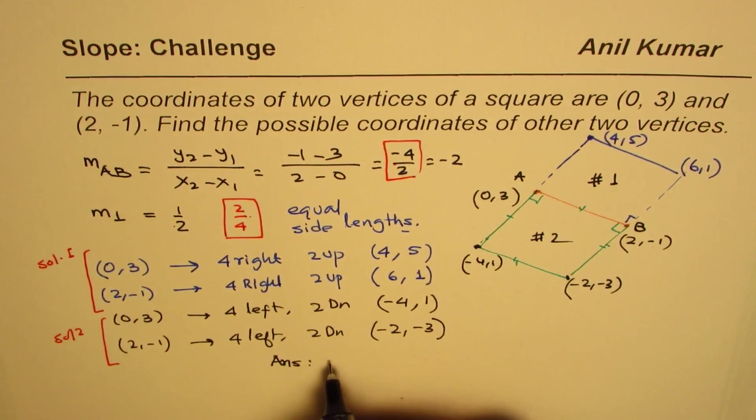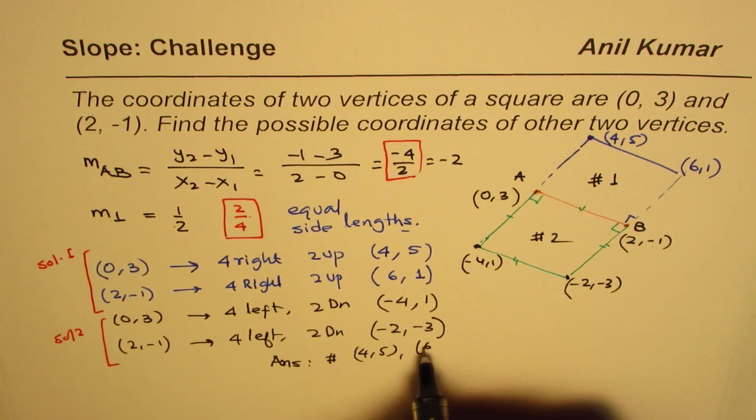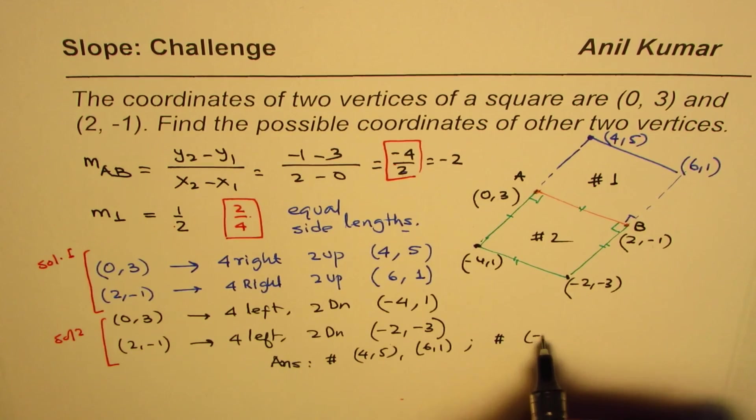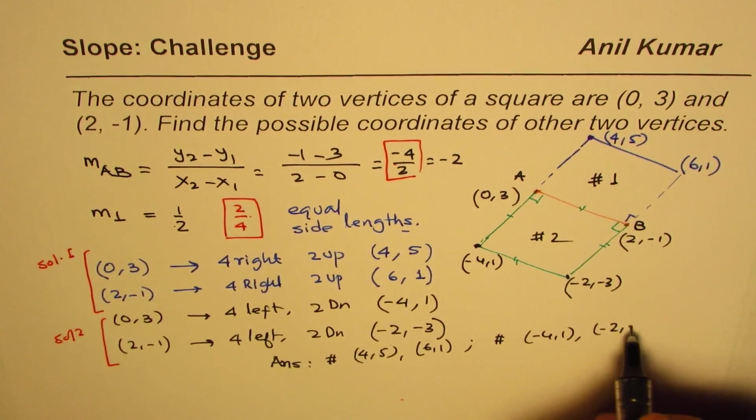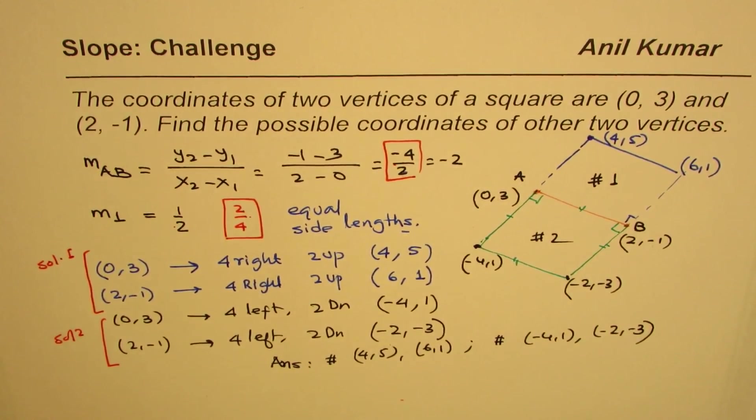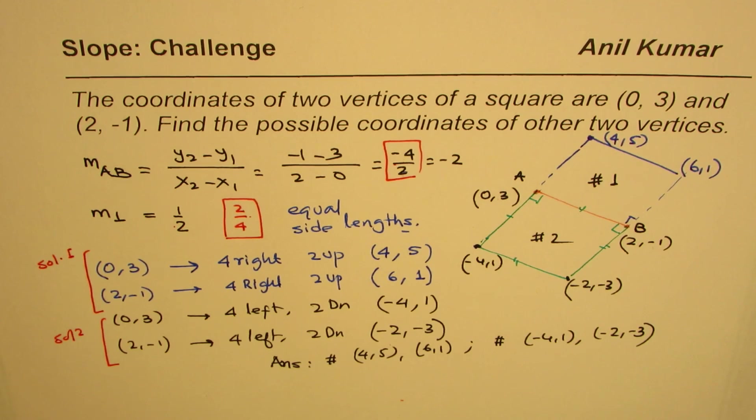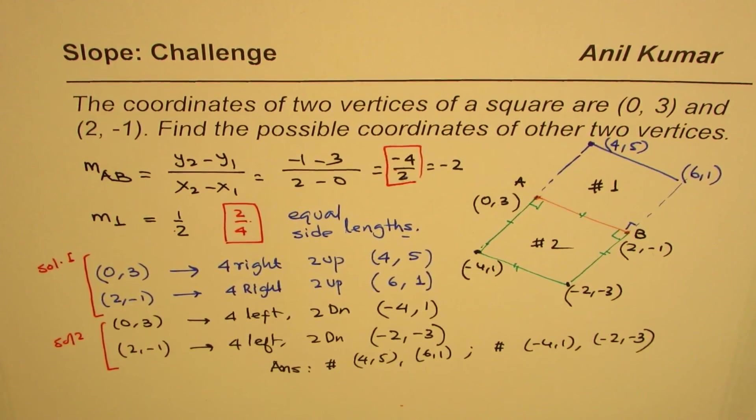Our answer: one set is (4, 5) and (6, 1), and the second set is (-4, 1) and (-2, -3). I hope the steps and concepts are clear. This is a very important question from an examination point of view. I am Anil Kumar. You can share and subscribe to my videos. Thank you and all the best.